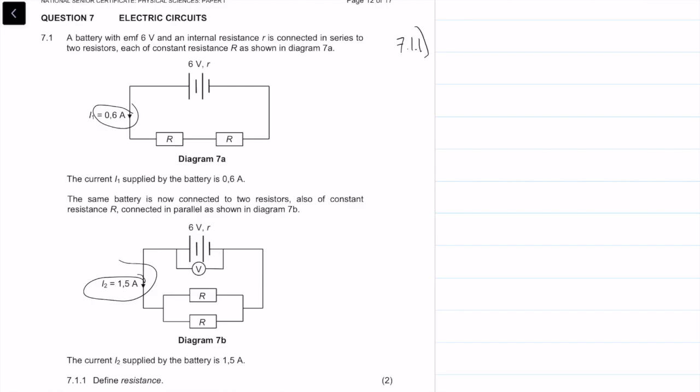The first question is define resistance. Resistance is a material's opposition to the flow of electric current. We get two marks for that.